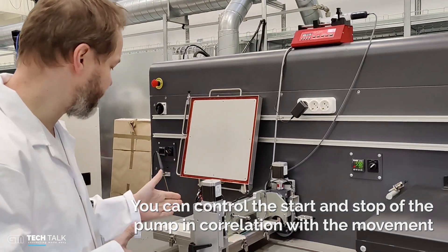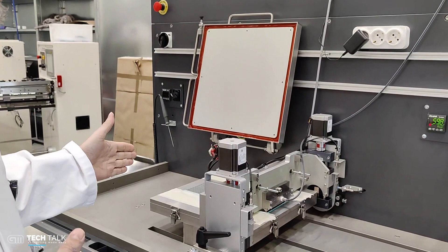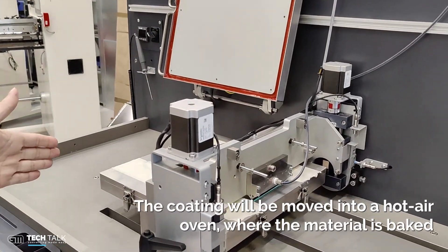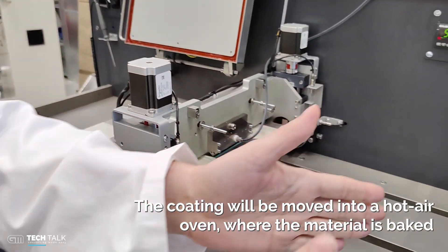Once the coating is done in the test area, the machine will move the coating into a hot air oven.